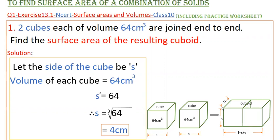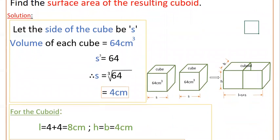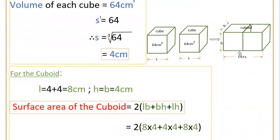Now find the cuboid measurements. Length of the cuboid equals side plus side, s plus s, that equals 8 centimeters (4 plus 4 because s equals 4 centimeters). And h equals b equals 4 centimeters, because these two are cubes. In a cube, all sides are equal.